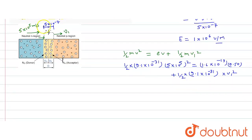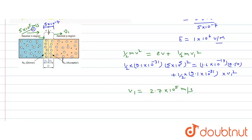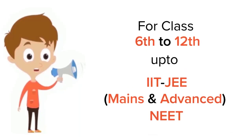After calculation, v1 comes out to be 2.7×10⁵ meter per second. So the electron approaches with speed 5×10⁵ m/s, and when it enters the P region, its speed reduces to 2.7×10⁵ meter per second. This is our final answer.